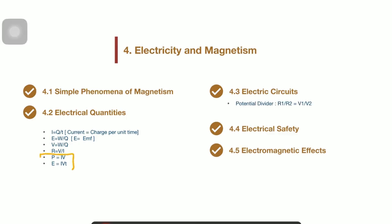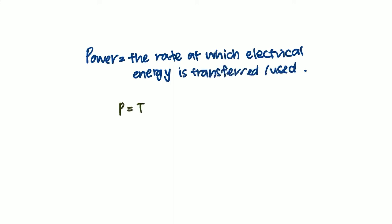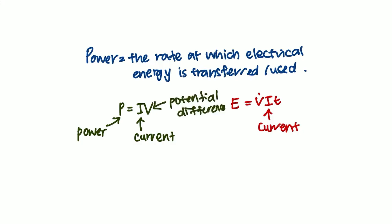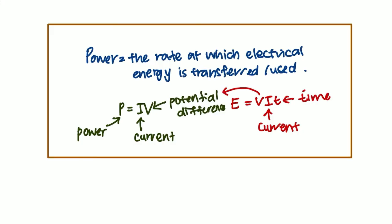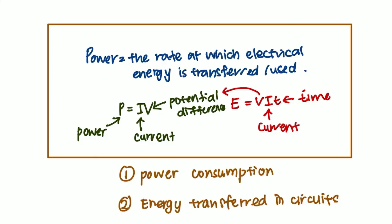Next, you have electrical energy and power. Electrical power P is the rate at which the electrical energy is transferred or used. The formula P equals to IV and E equals to IVT, where P represents power, I is the current, V is the potential difference and T is time, will assist you in calculating power consumption and energy transfer in circuits.